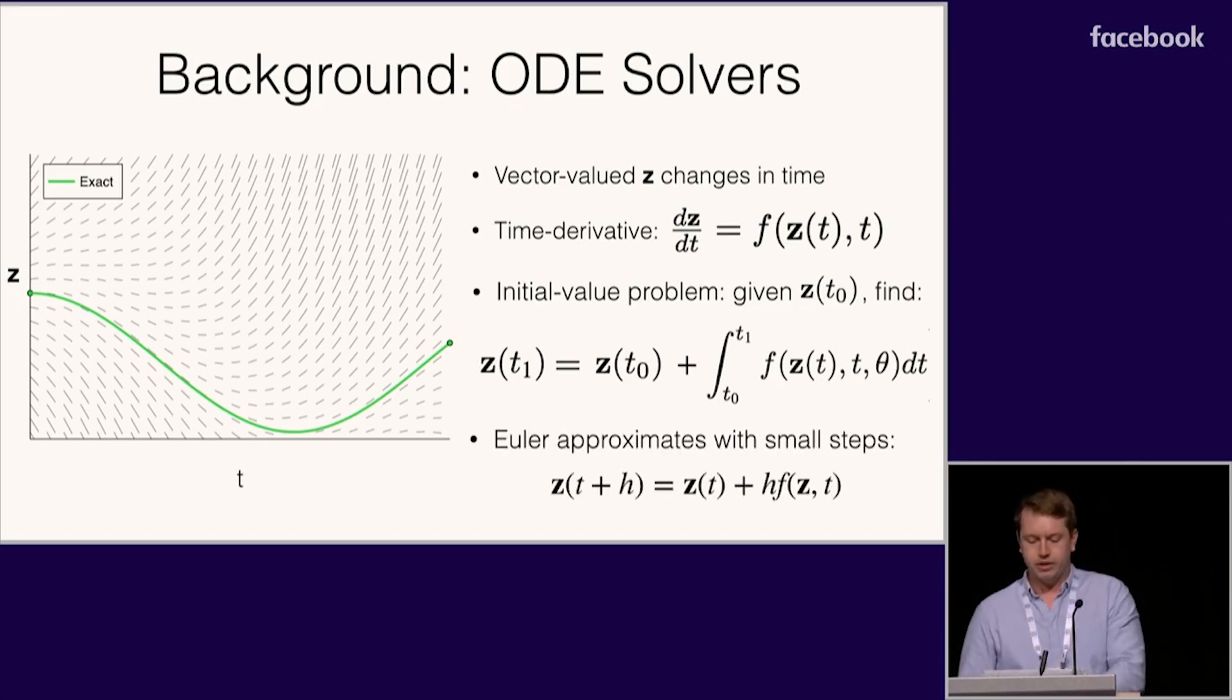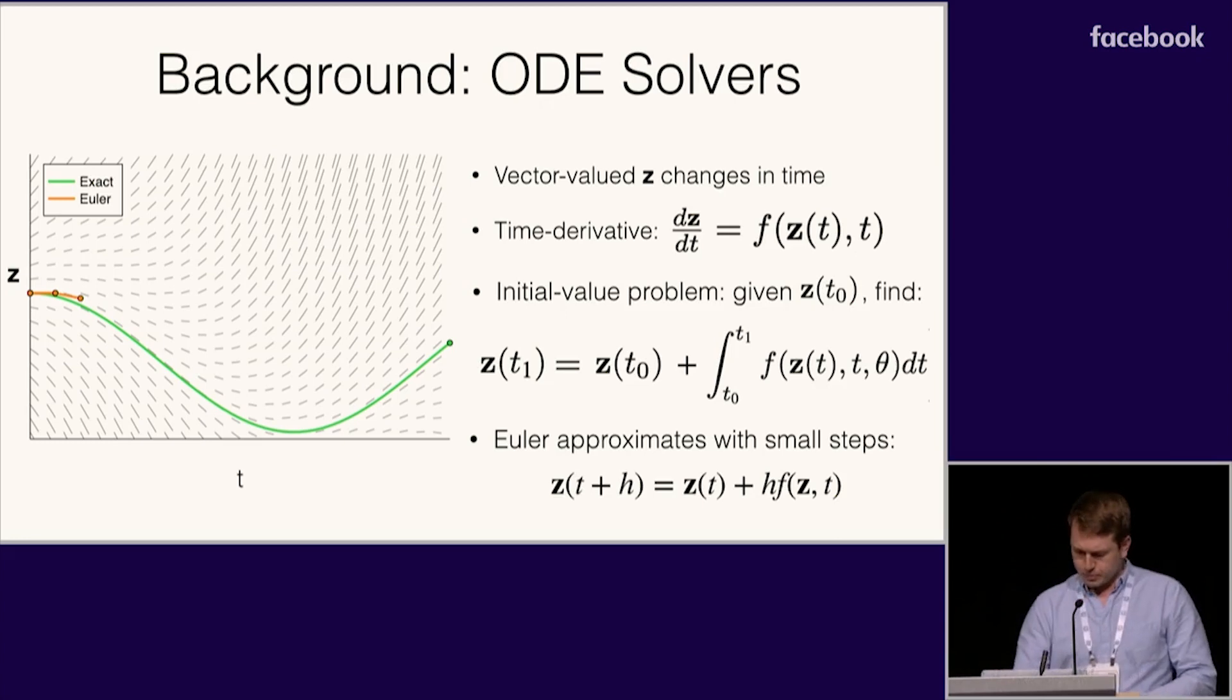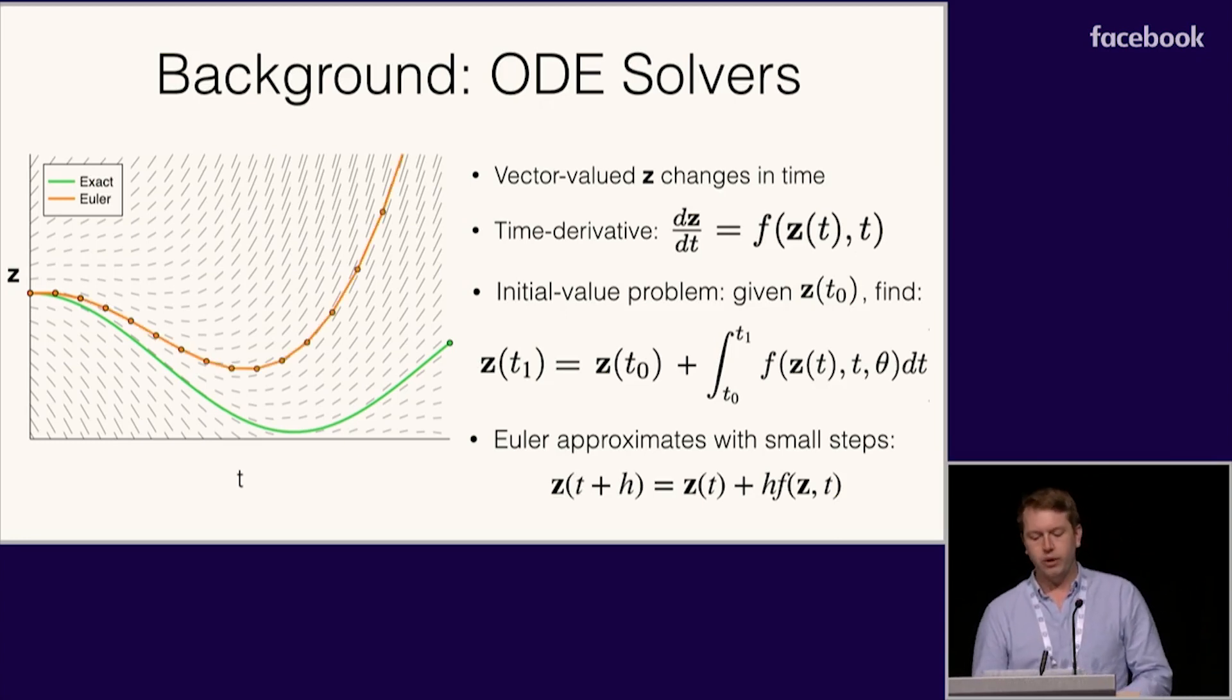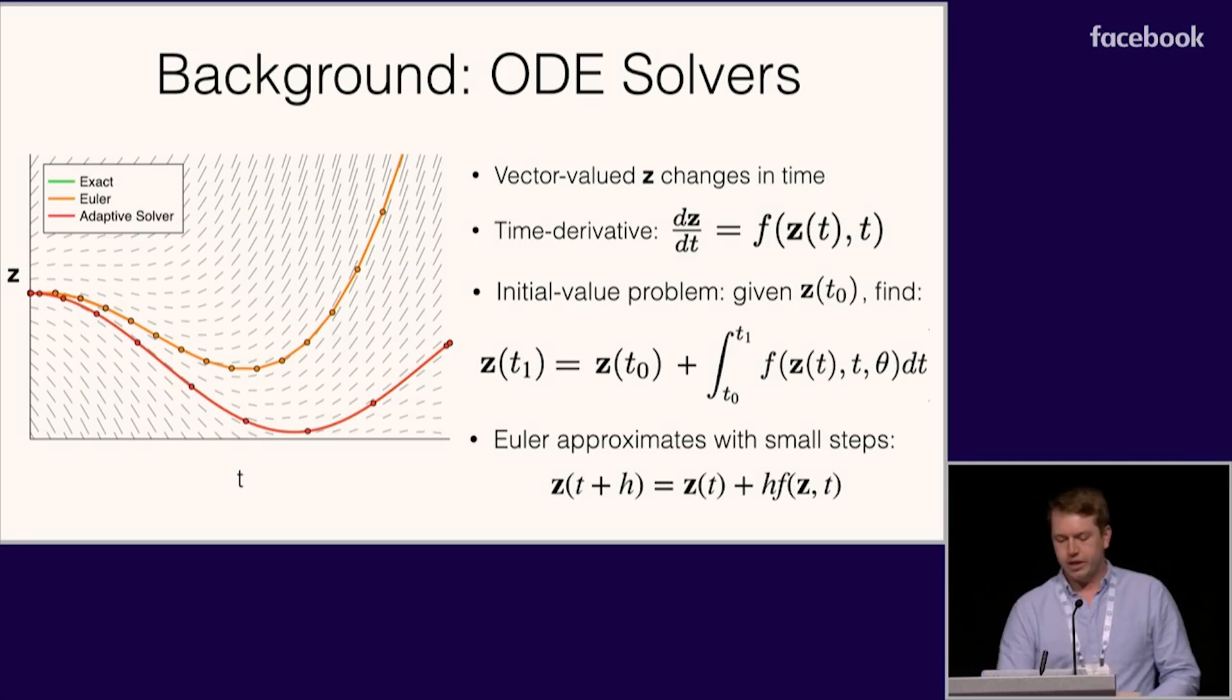The oldest and simplest numerical solver is Euler's method, which simply takes many small steps in the direction of the gradient at the current position. Euler's method is generally considered a poor solver because it accumulates error at every step. Fortunately, there's been hundreds of years of progress in ODE solvers since then. Modern solvers have sophisticated evaluation and extrapolation strategies and provide error guarantees by adapting their step sizes to the difficulty of the problem.